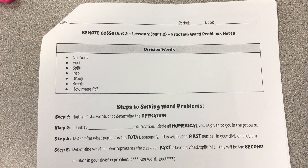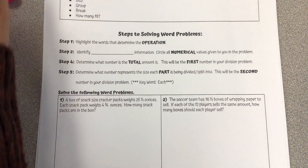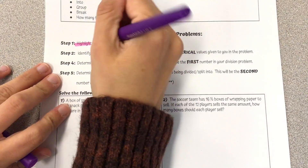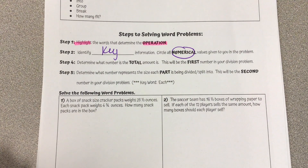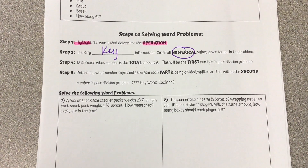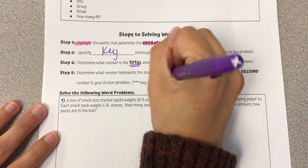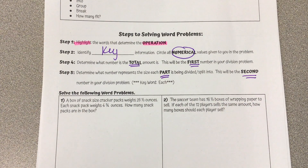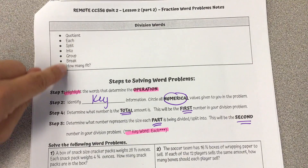The steps for solving word problems: first, we are annotating by highlighting the operation. Step two is identifying key information by circling all numerical values. Then we determine what the total amount is — that will be the first number in our division problem. Then we determine what each part is, which is the second number we are dividing by. The word 'each' is a big clue, but check for the other words as well.